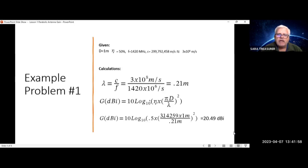Let's go over an example problem. If your parabolic dish is one meter in diameter with an efficiency of 50%, and your frequency you're measuring is 1420 megahertz, which is the hydrogen line, your wavelength is 3 times 10 to the 8th meters per second over 1420 times 10 to the 6th per second. 10 to the 6th is megahertz equals 0.21 meters.